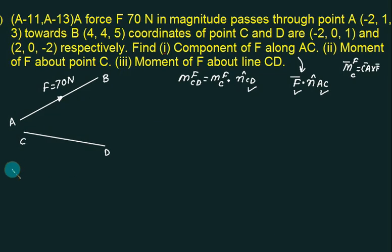First of all we will find out CD bar. CD bar is D minus C. D is this. And this one is C. 2 minus 2. 2 minus minus 2. Is it 4 right? 4 right? 0 minus 0. 0j. Minus 2 minus 1. Minus 3k. What is the mod of this? Under root of 4 square plus 3 square plus 0 square. So mod of CD is 5.